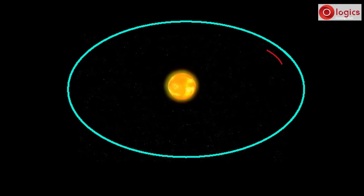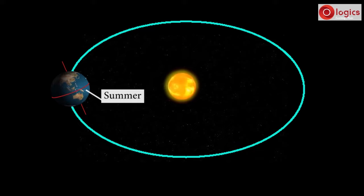Now Earth travels along its orbit and reaches this region. Its tilt does not change. Now southern hemisphere exposes to more sunlight. So southern hemisphere will have summer, and northern hemisphere will have winter.